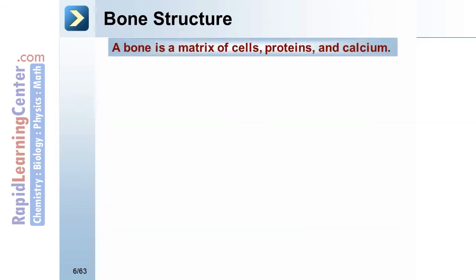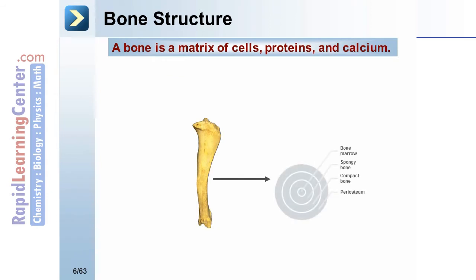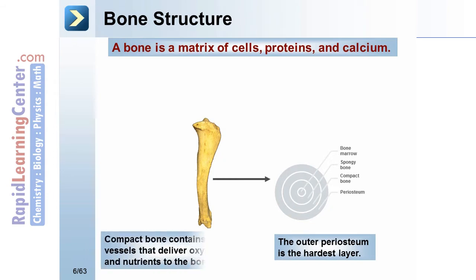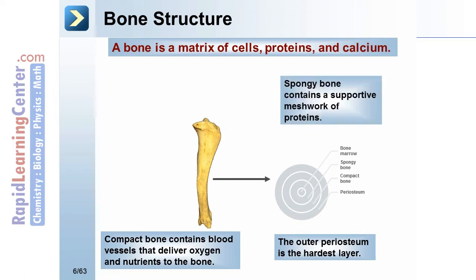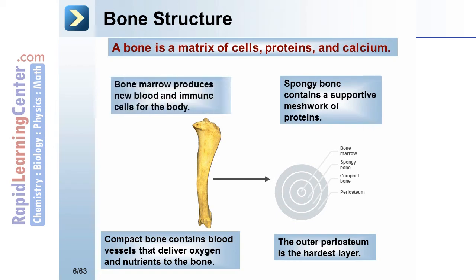A bone is a matrix of cells, protein, and calcium. From the inside out, the bone is made of bone marrow surrounded by spongy bone, which is surrounded by compact bone, and on the outside is the periosteum. The outer periosteum is the hardest layer. Compact bone contains blood vessels that deliver oxygen and nutrients to the bone. Spongy bone contains a supportive meshwork of proteins. Bone marrow produces new blood and immune cells for the body.